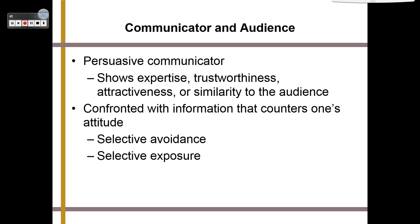When we are confronted with information that counters our own attitudes, we tend to do one of two things: selective avoidance — choosing to avoid information we don't agree with — or selective exposure — choosing to only be exposed to information we already agree with. We call this an echo chamber. These are really two sides of the same coin.